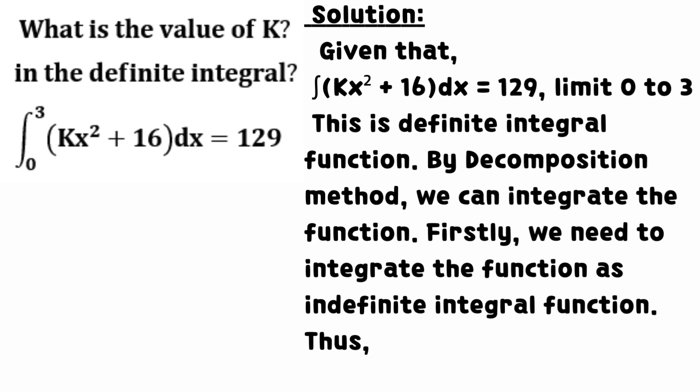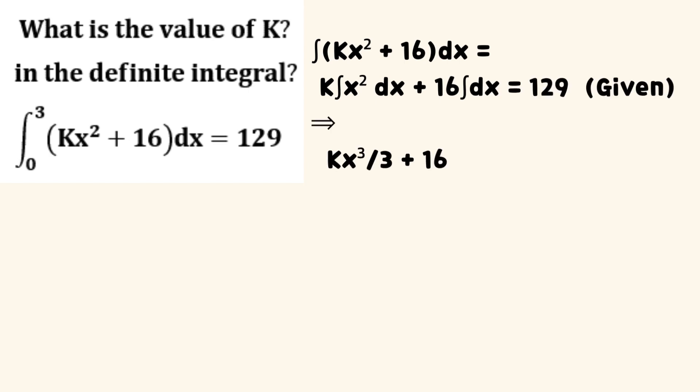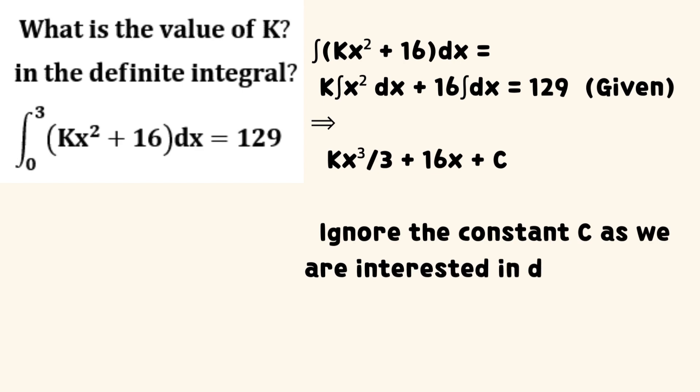Thus, the integration of the function equals the sum of k times the integration of the square of x dx and 16 times the integration of 1 dx equals to 129. It implies that the sum of k times the cube of x divided by 3, 16 times x and c.